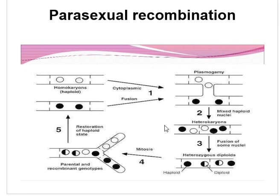The parasexual cycle was first discovered by Pontecorvo (P-O-N-T-E-C-A-R-V-O) and Roper (R-O-P-E-R) of the University of Glasgow in 1952, in Aspergillus nidulans — the imperfect stage of Emericella nidulans, a strain of fungus.